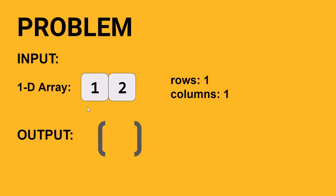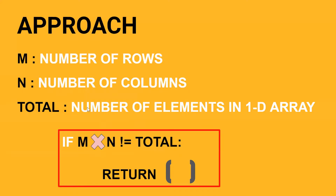Let's see the approach to solve this problem. We will take one variable M as the number of rows and N as the number of columns in the output, and total, which is the number of elements present in the one-dimensional array. The first thing we have to check is if the total number of elements in the one-dimensional array is not equal to the number of elements possible in the two-dimensional array of size M cross N. If this is the case, then you have to return an empty two-dimensional array.